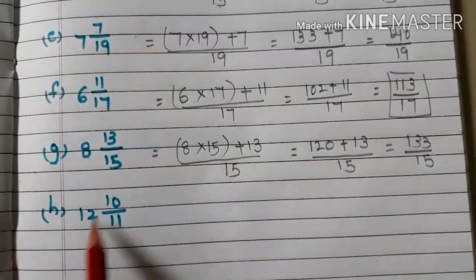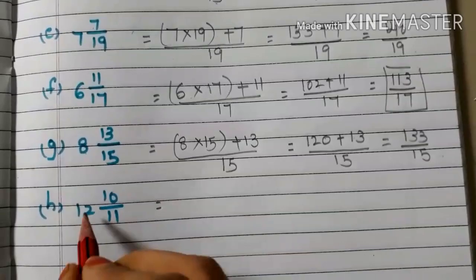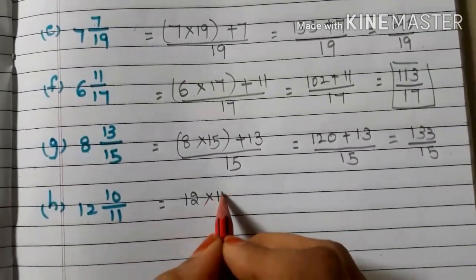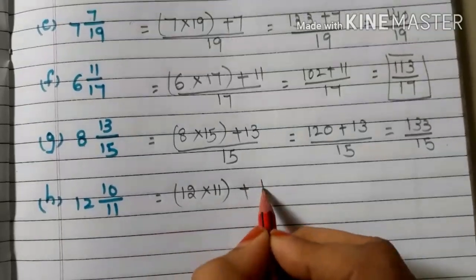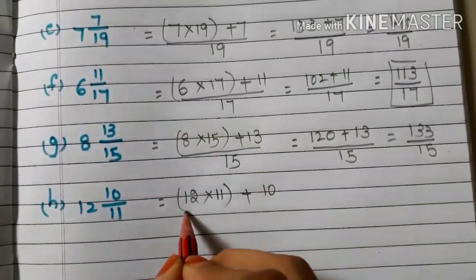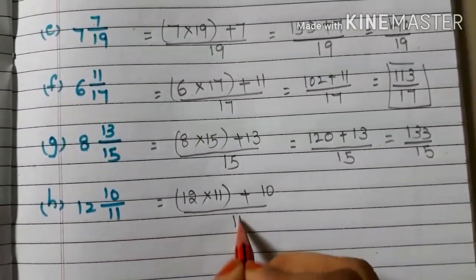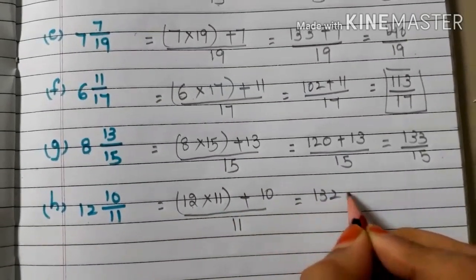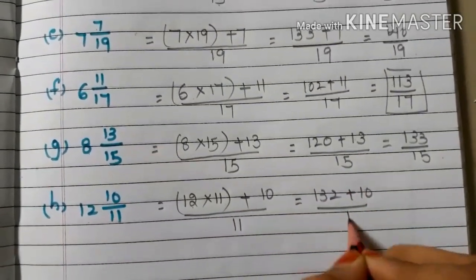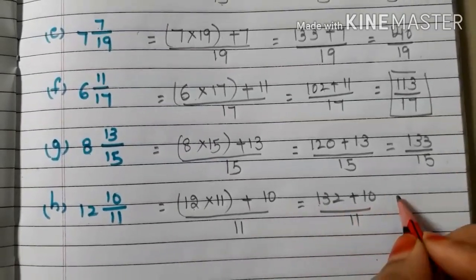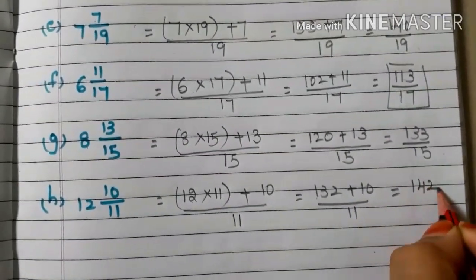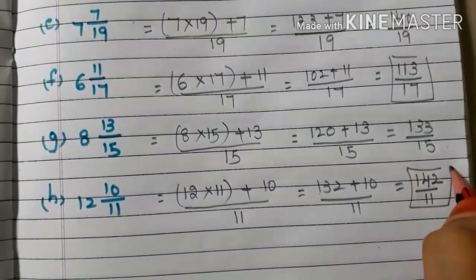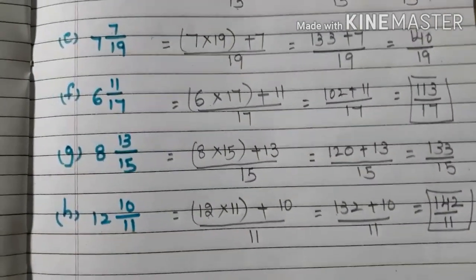H: 12 and 10/11. Whole number 12 into 11, plus numerator 10, by denominator 11. 12 elevens are 132, plus 10, by 11. 132 plus 10 is 142/11. So the answer is 142/11.